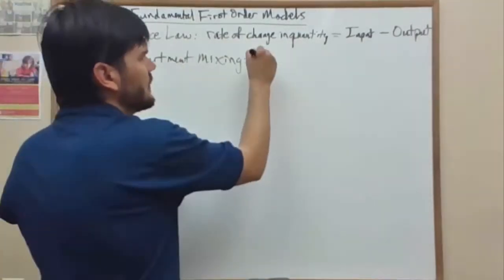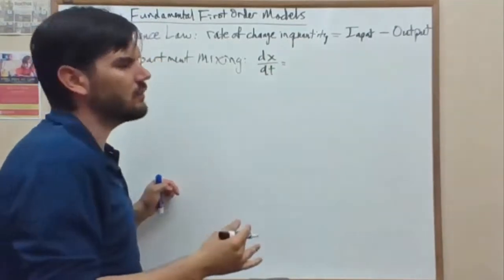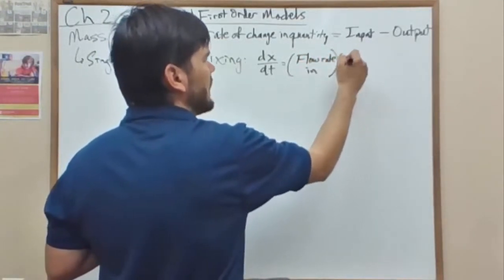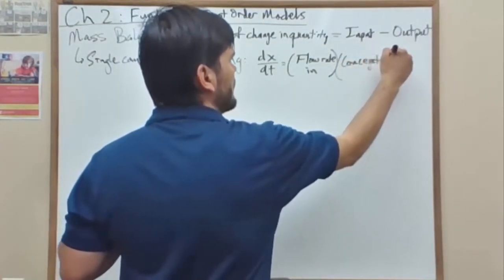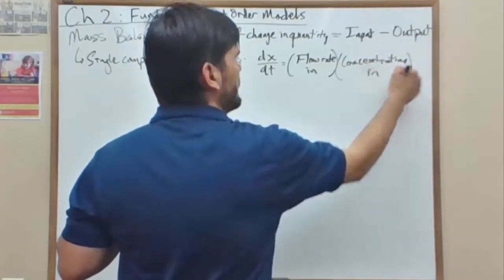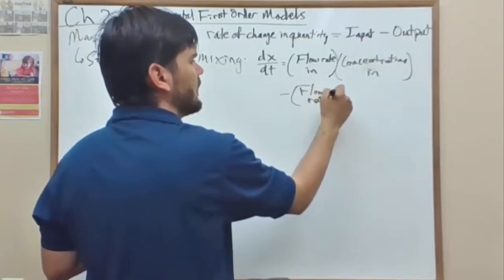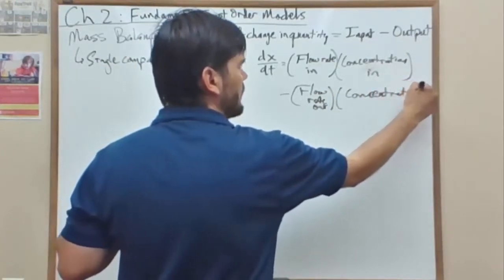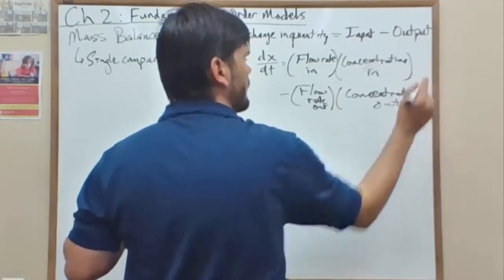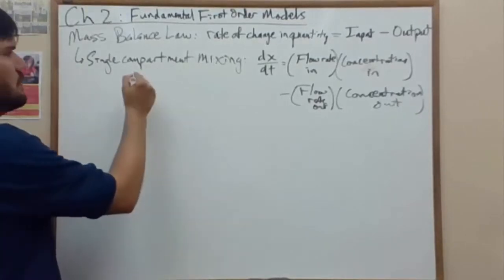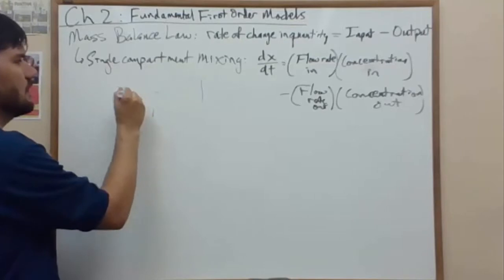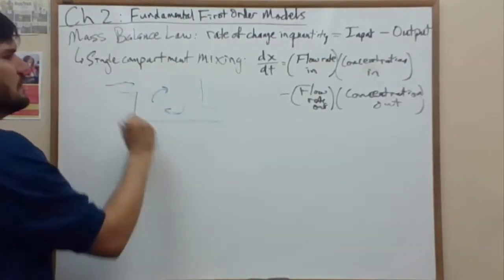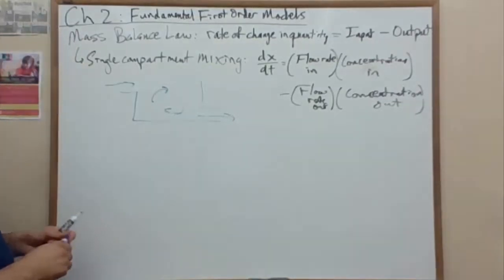And the example where we saw this in chapter 2 is in the single compartment mixing problem. In that case, our input is represented as a flow rate in times a constant concentration in minus a flow rate out times a concentration out. That's something like this shape where it's a well mixed liquid in the middle, you have an inflow coming in, out flow going out. And the inflow is known.